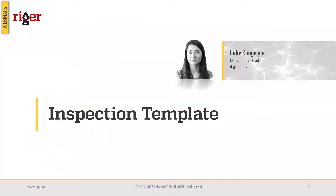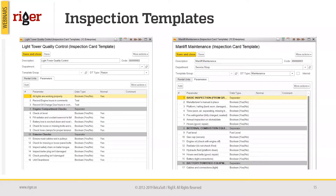Now let's move to the practical part of the inspection process, and I will ask Indra to cover this. Thank you, Gleb. Hello, my name is Indra and I'm support technician here at Rigor. I will speak about inspection card templates today and how to create an inspection card template in the Rigor system. In this slide, you can see an example of inspection card templates — on the right side is a template for the first stage, the main inspection, and on the left side is the second stage template for quality control. Each inspection card template may have different types of parameters.